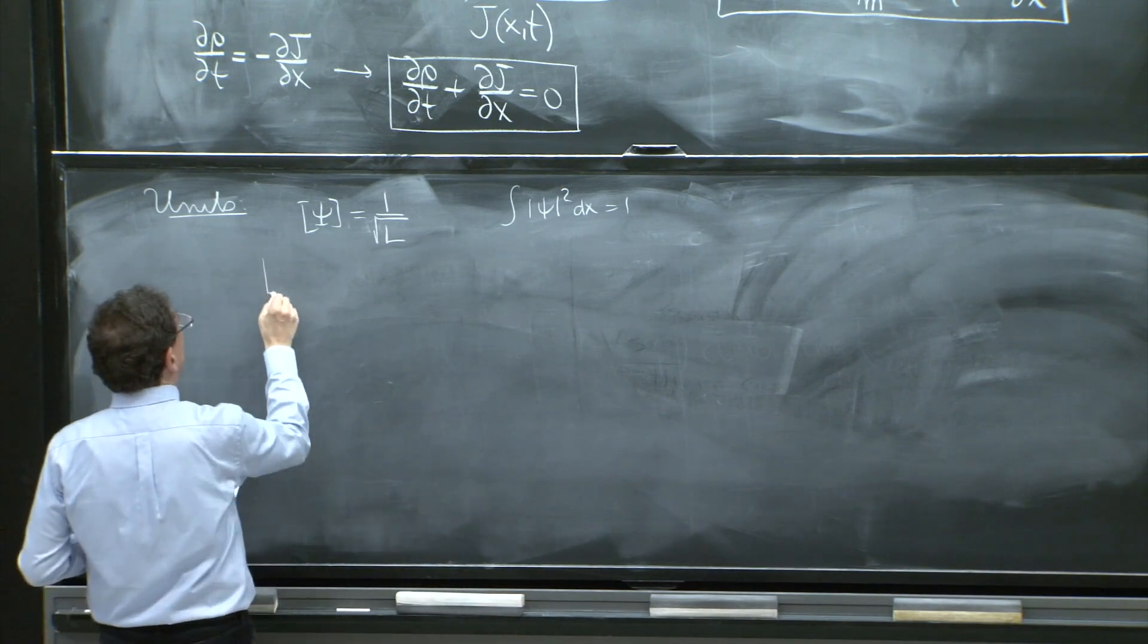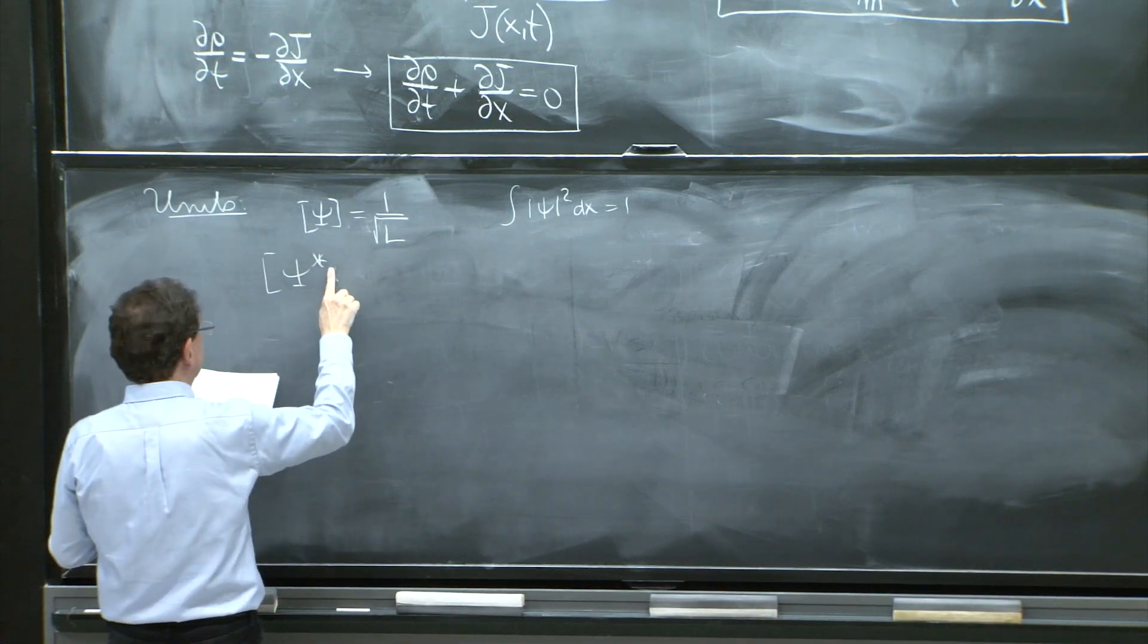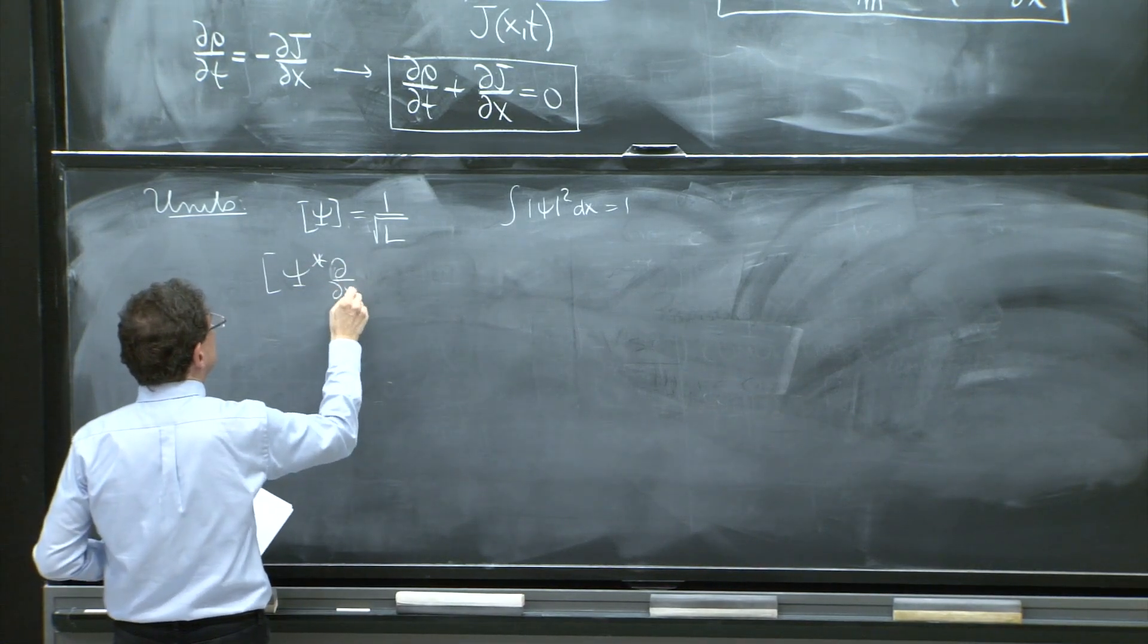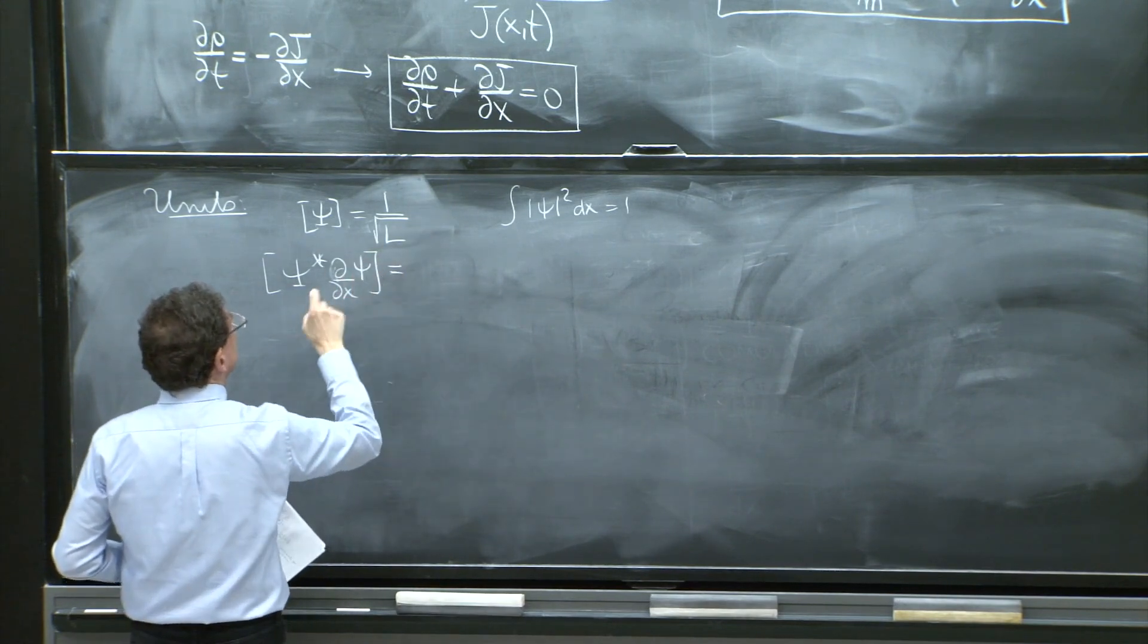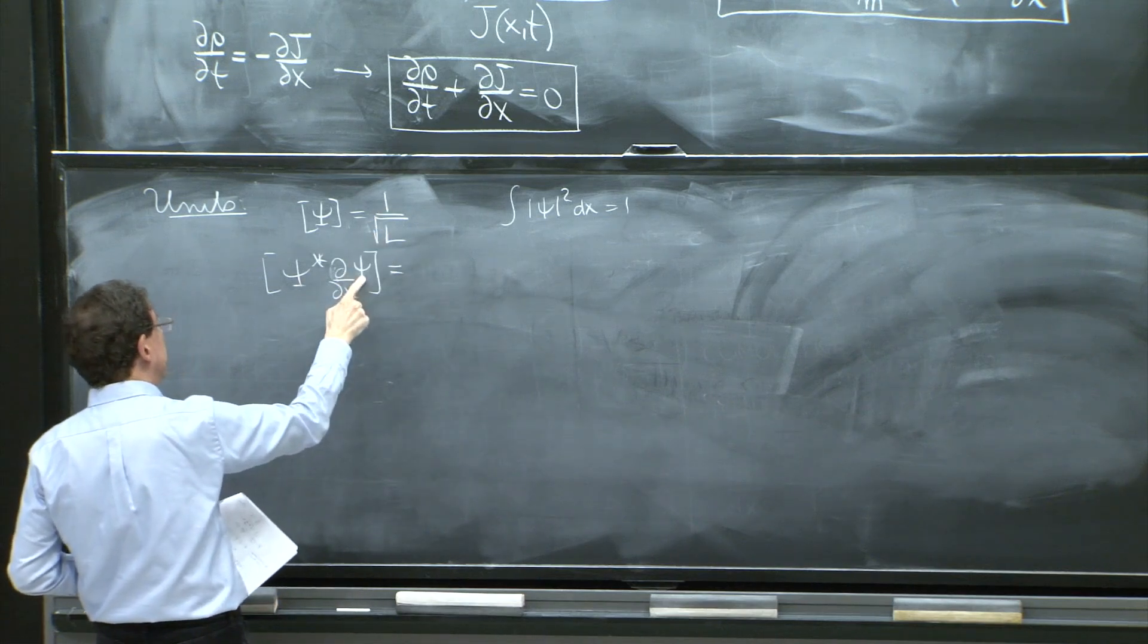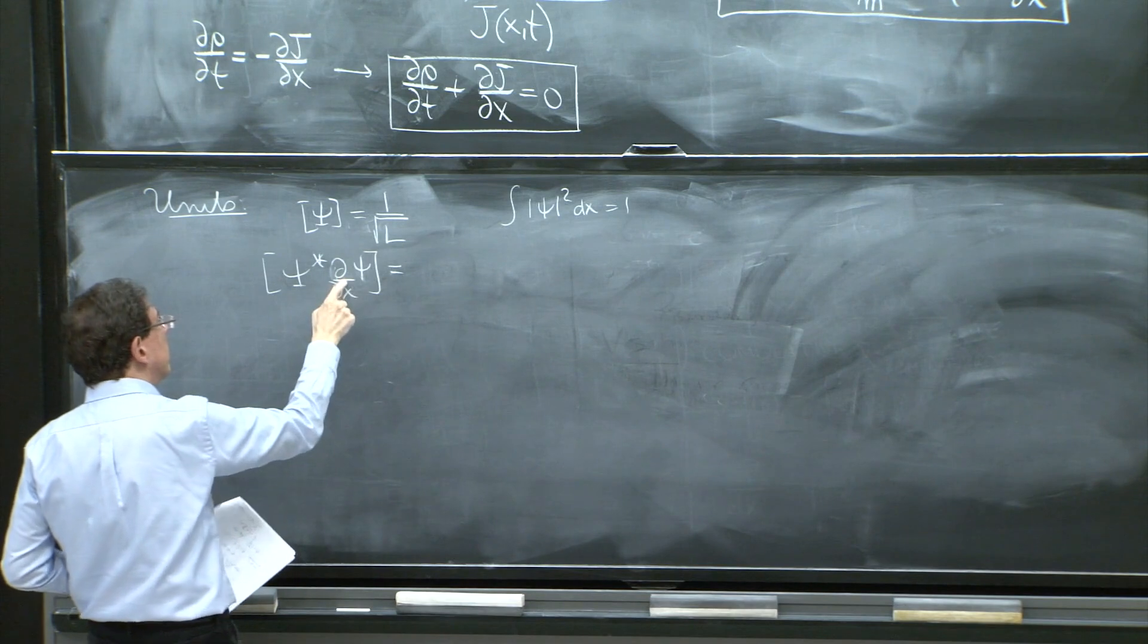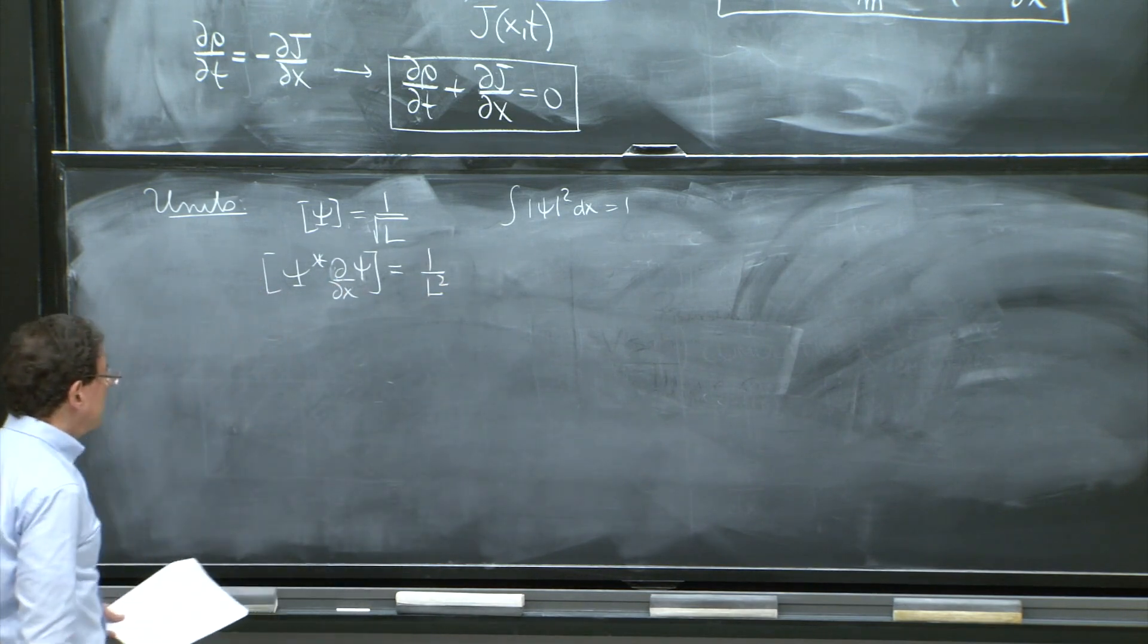And what are, therefore, the units of psi star d/dx psi, which is part of the current formula? Well, 1 over square root of length, 1 over square root of length is 1 over length. And another 1 over length is 1 over length squared.